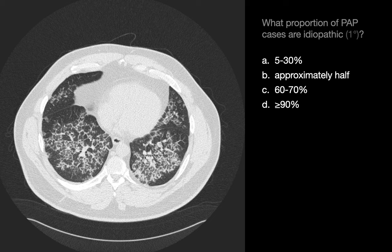Idiopathic, or primary PAP, is the most common form of PAP and accounts for at least 90% of PAP cases. It is believed to be an autoimmune disease where autoantibodies against granulocyte macrophage colony stimulating factor prevent the clearing of pulmonary surfactant by alveolar macrophages.